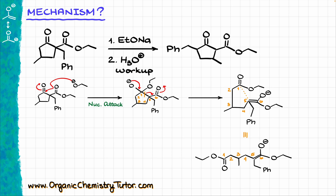Numbering the atoms makes my life much easier to indicate where all the groups are without misplacing any atoms. For instance, on carbon number three we have a methyl group, and the benzyl group is sitting on carbon number five — here it is in the open-chain molecule.